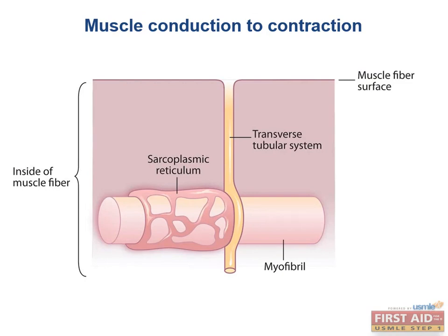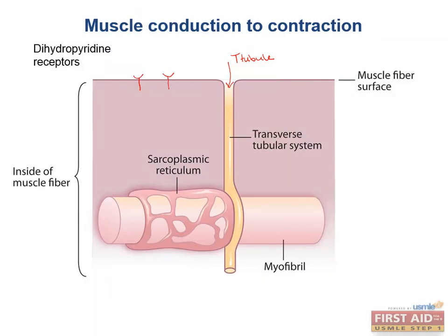In an individual myocyte, this invagination represents a T-tubule. On the surface of the cells, you have dihydropyridine receptors, which are voltage-gated calcium channels. Within the cell lining the sarcoplasmic reticulum, you have ryanodine receptors, which are calcium-induced calcium channels.